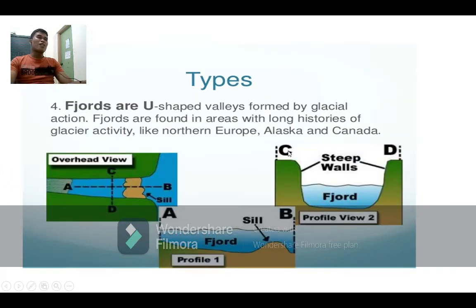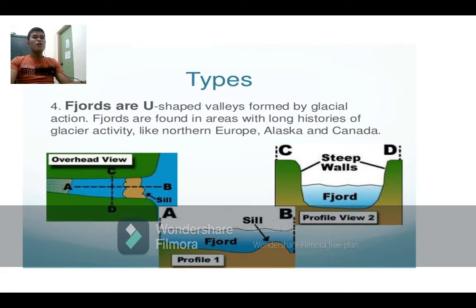The last type of estuary is the fjord estuary — a U-shaped valley formed by glacial action. Fjords are found in areas with a long history of glacier activity, like in Northern Europe, Alaska, and Canada.